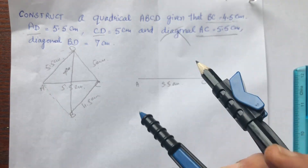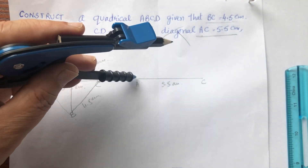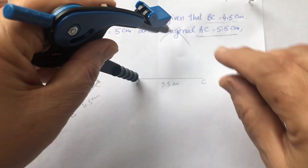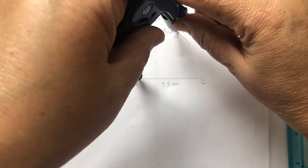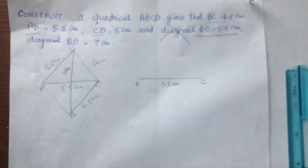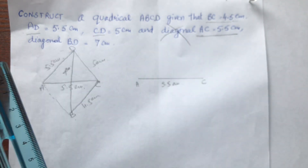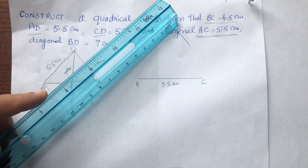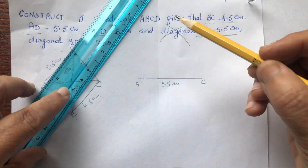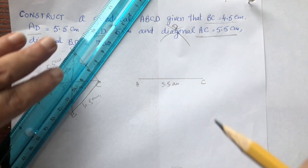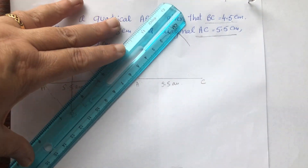If the arcs are not crossing, you can extend the arc like this. Now this is the point D — join it. This is the point D, join this.